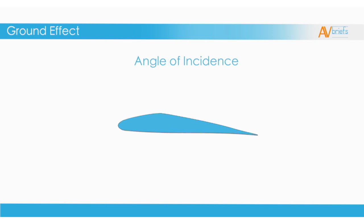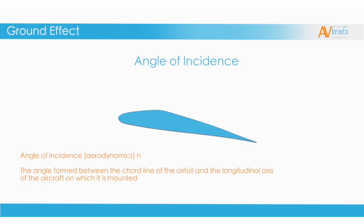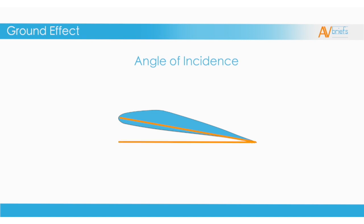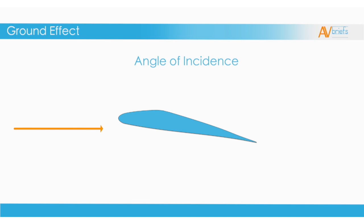Let's look at what makes up ground effect. An angle of incidence is the angle formed between the cord line of the airfoil and the longitudinal axis of the aircraft on which it is mounted. Here we have the cord line between the leading edge and the trailing edge. There's also another reference line parallel with the horizon; the angle created between these two lines is known as the angle of incidence — it's the angle of attack of the wing when the airplane is on level ground, typically around four degrees. One of the effects of this angle of incidence is that the relative airflow has to wash up and over the leading edge, then continues over the wing creating lift and down the trailing edge.